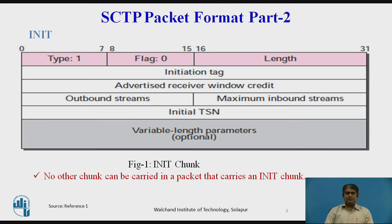Variable Length Parameters: These optional parameters may be added to the init chunk to define the IP address of the sending endpoint, the number of IP addresses the endpoint can support (multihoming), the preservation of the cookie state, the type of addresses, and support of Explicit Congestion Notification (ECN). No other chunk can be carried in a packet that carries an init chunk.